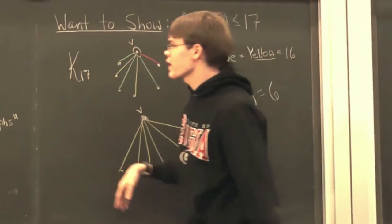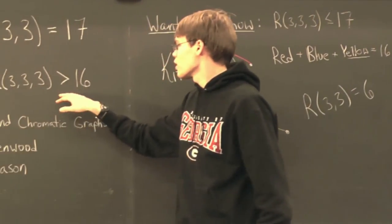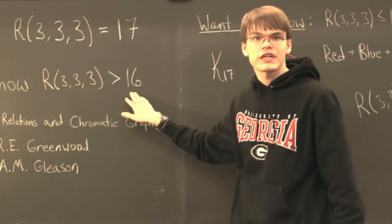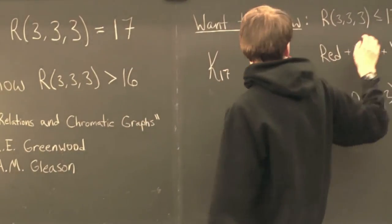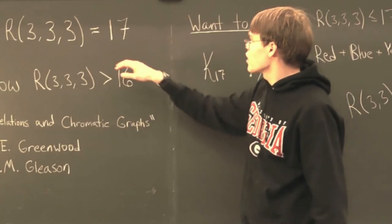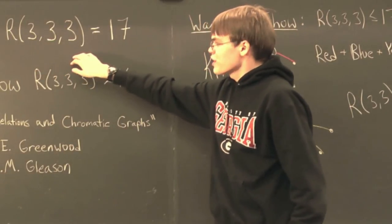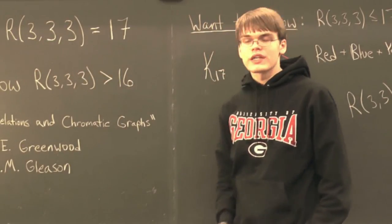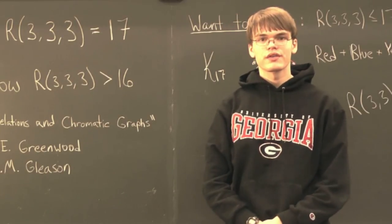Now, recall that we already knew that this particular Ramsey number was greater than 16. We just showed that it's less than or equal to 17. So, indeed, R(3,3,3) is equal to 17. And that concludes our proof.